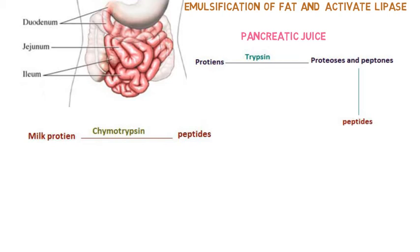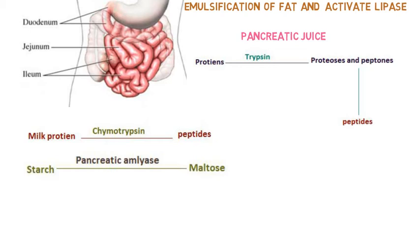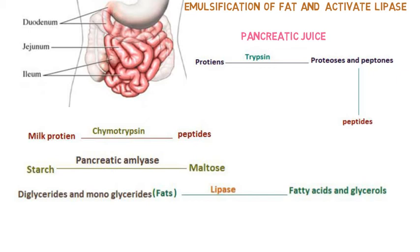Pancreatic juice helps in the digestion of proteins into proteoses and peptones by the action of trypsin, and these are further converted into peptides. It contains a series of enzymes. Chymotrypsin converts milk protein into peptides. Pancreatic amylase converts starch into maltose. Lipase converts diglycerides and monoglycerides — which are basically fats — into fatty acids and glycerols. Nucleic acids are converted into nucleotides in the presence of nuclease.